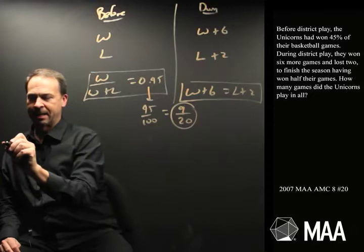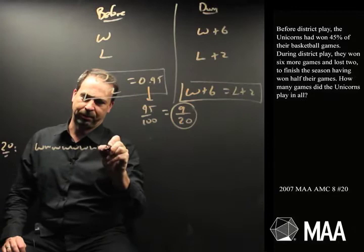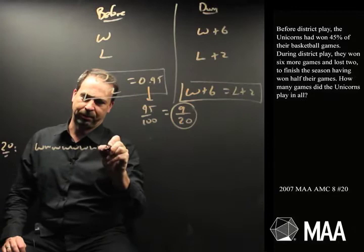So if they were to play a set of twenty games, we had nine wins. I'm going to draw nine W's and eleven L's. Squeaking away. There's eleven L's, I think. Interesting.